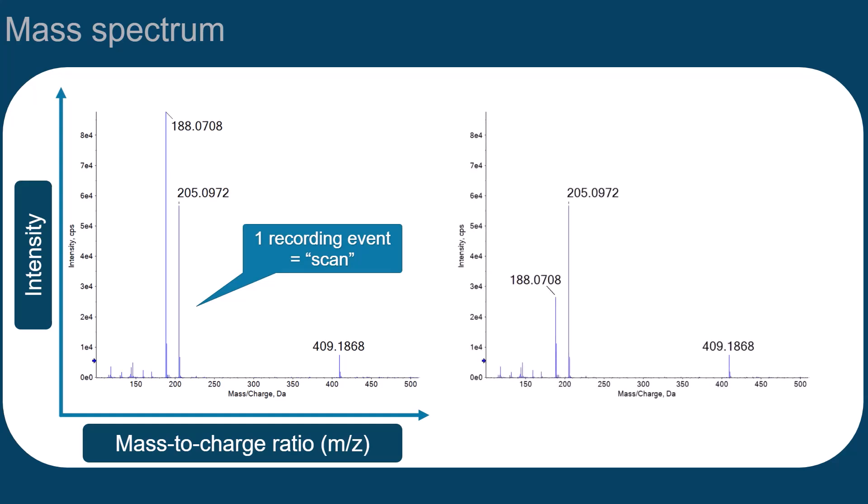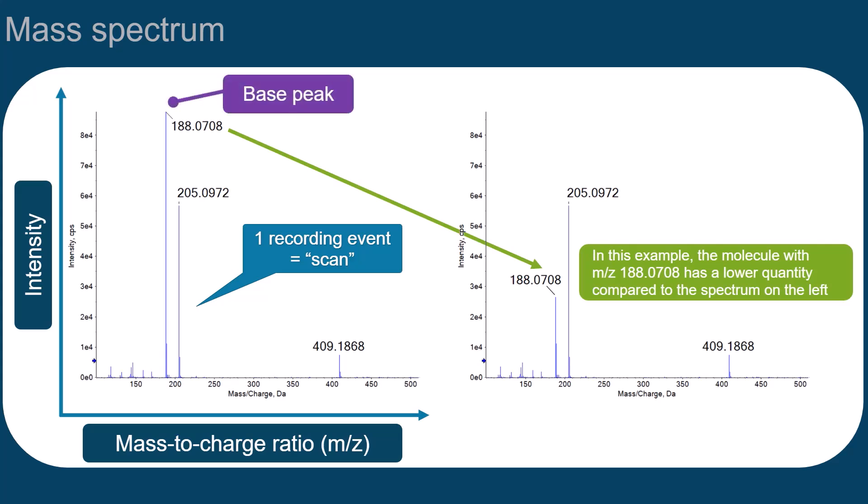When comparing the same type of molecule, signal intensity can provide quantitative information. The highest peak in a spectrum is called the base peak. Very small and unmeaningful data is called noise.